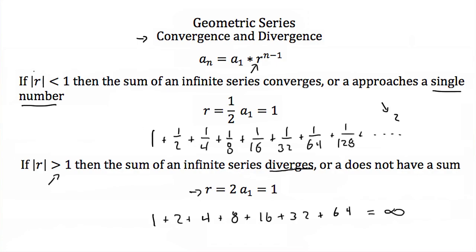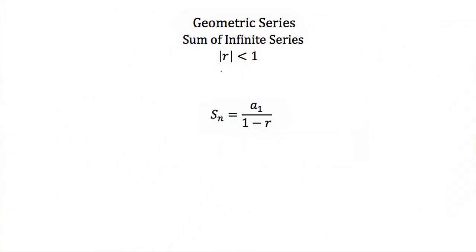If the absolute value of r is less than 1, your series will converge to an answer. To find that sum we use the formula: S equals a1 divided by (1 minus r), where a1 is the first term and r is the common ratio. That's an easy formula — let's try using it.